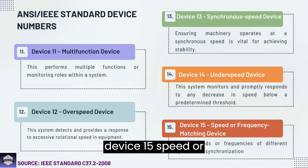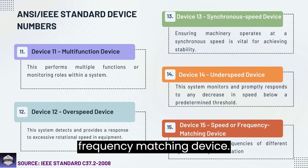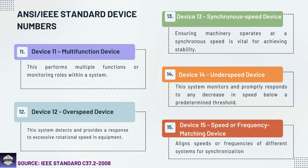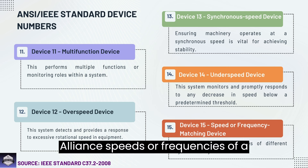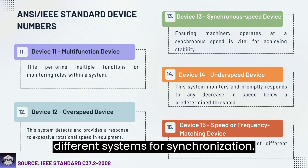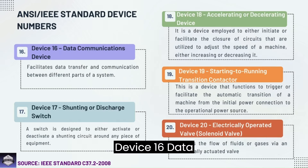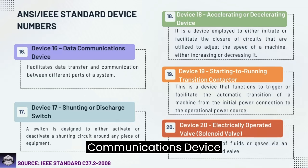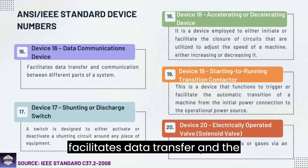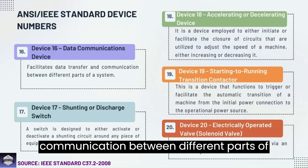Device 15: Speed or frequency matching device — aligns speeds or frequencies of different systems for synchronization. Device 16: Data communications device — facilitates data transfer and communication between different parts of a system.